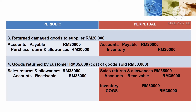Number four: goods returned by customer RM35,000, with cost of goods sold RM30,000. Under periodic, debit sales returns and allowances and credit accounts receivable RM35,000. Under perpetual, we record two entries: first, debit sales returns and allowances and credit accounts receivable RM35,000; second, debit inventory RM30,000 and credit cost of goods sold RM30,000.